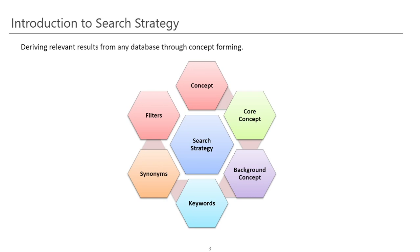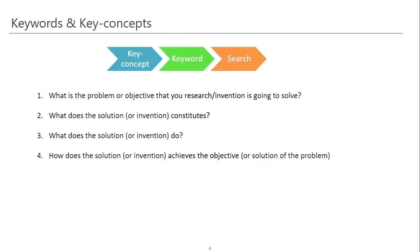Let us see how we are going to proceed with core concepts, background concepts, keywords, synonyms, and filters in order to build an effective search strategy. In order to find relevant results from any database — be it a patent database or non-patent database, whether for filing a patent or for finding relevant technical articles for your PhD or master's program — the fundamental principle is: identify the key concepts related to your research or invention, form keywords from those concepts, and then search on a database.